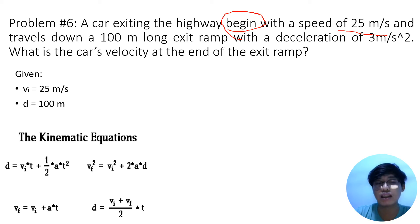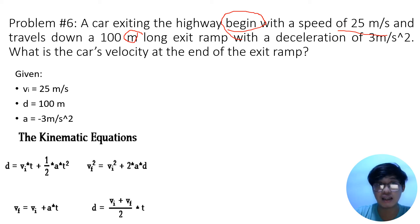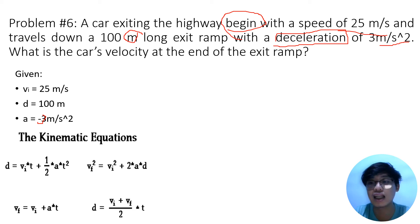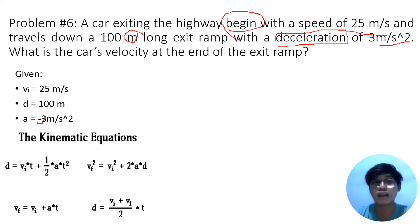We also have the distance of 100 meters, and acceleration of negative 3 meters per second squared — negative because it is a deceleration. Deceleration is considered negative acceleration. Whenever you read 'deceleration,' that means negative acceleration. So our acceleration is negative 3 meters per second squared.